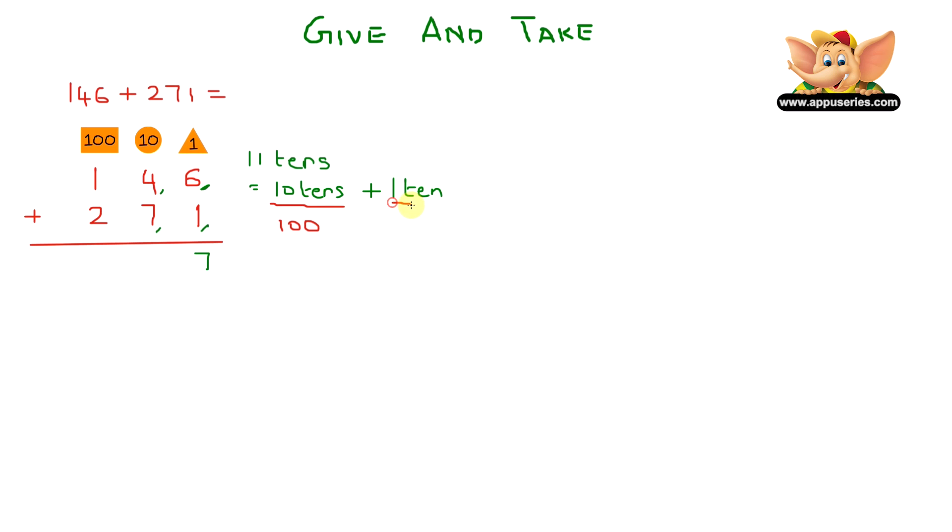So we write this one ten in the tens place and move this one set of 10 tens to the hundreds place. So let's carry over and write a 1 here in the hundreds place. So in the hundreds place we now have 1 plus 1 plus 2 equals 4. So the answer is 417.